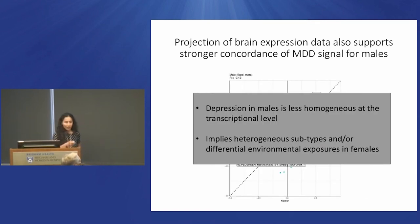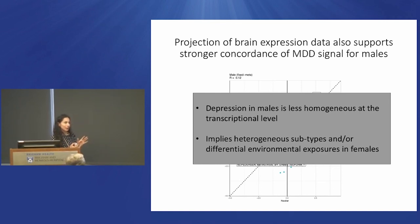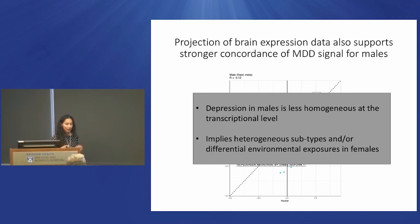To summarize: with this data, gene sets associated with depression in males tend to be more homogeneous than in females. This could be a genetic cause — or an environmental cause, where females are exposed to different environmental factors from each other causing heterogeneity, or it could be at the genetic level.